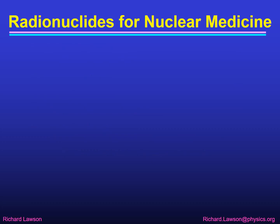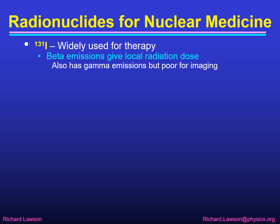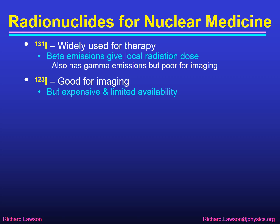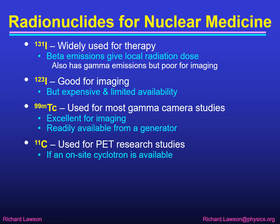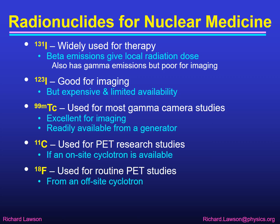Looking at the radionuclides for nuclear medicine: iodine-131 is widely used for therapy since its beta emissions give a local radiation dose, though its high-energy gamma emissions make it poor for imaging. Iodine-123 on the other hand is good for imaging because it has good gamma emissions, but it's expensive because it's cyclotron produced and has limited availability. Technetium-99m is used for most gamma camera studies in nuclear medicine — it's excellent for imaging and is readily available from a generator and cheap. Carbon-11 is used for PET research studies but requires an on-site cyclotron. Fluorine-18 is used for most routine PET studies and is available from an off-site cyclotron because its half-life is longer.